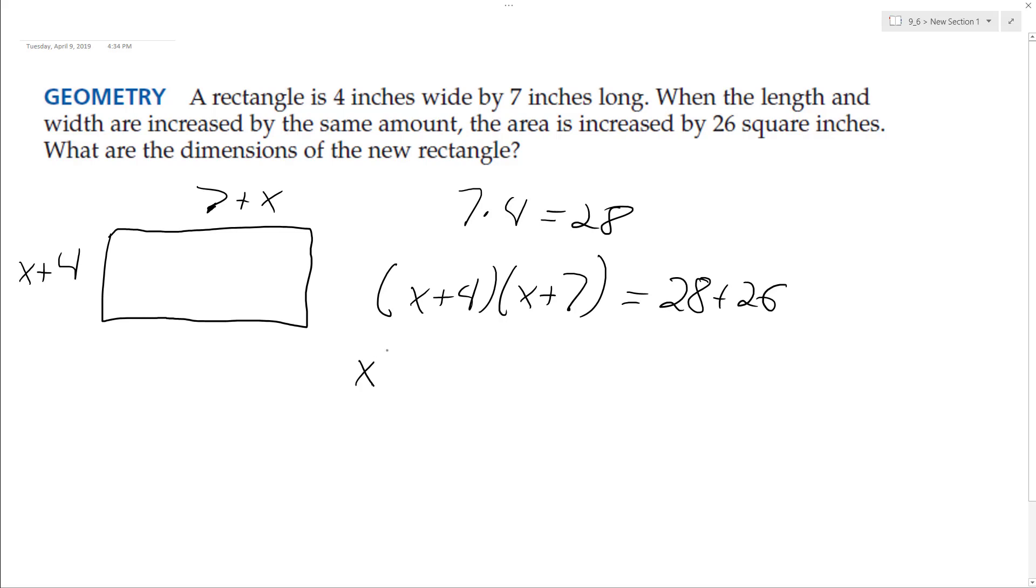Expanding this: X squared plus 7X plus 4X plus 28 equals 28 plus 26, that's 54. So X squared plus 11X minus 26 equals zero.